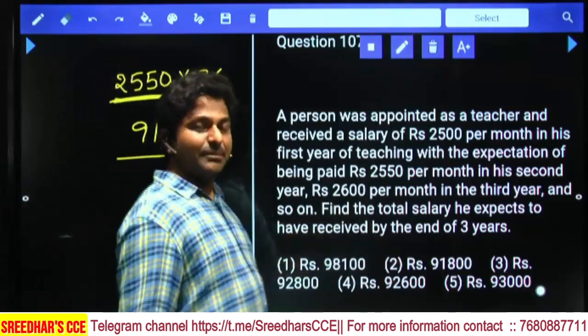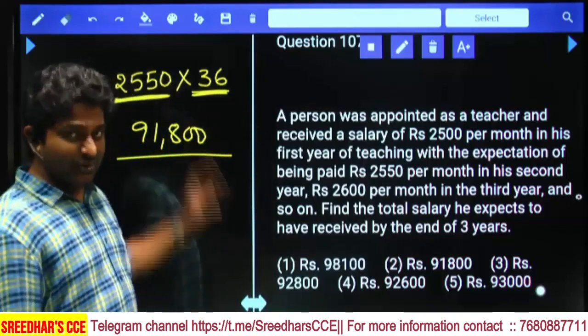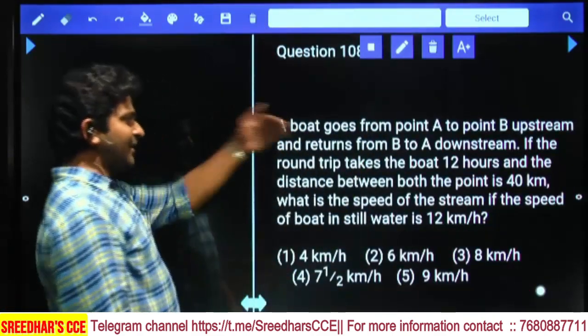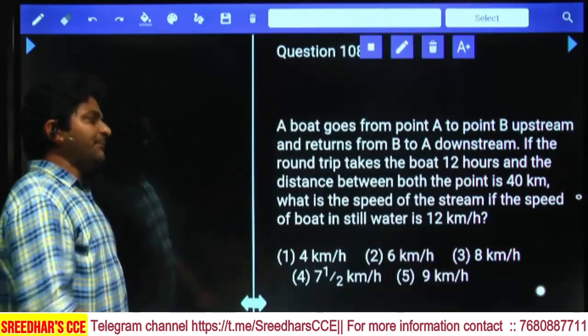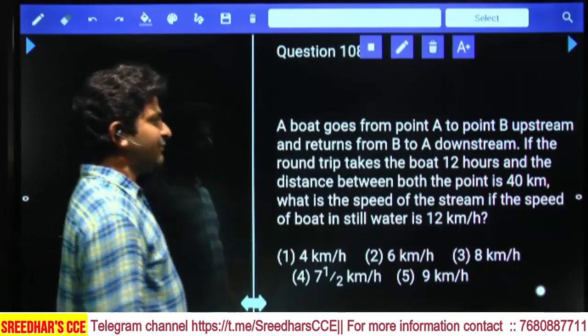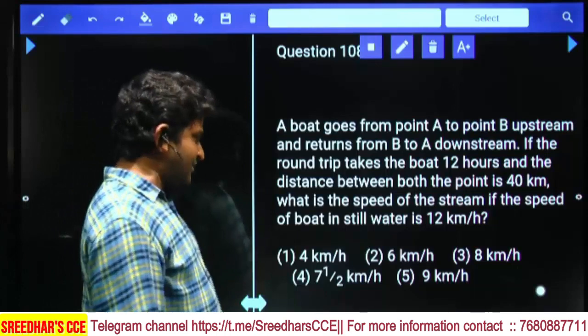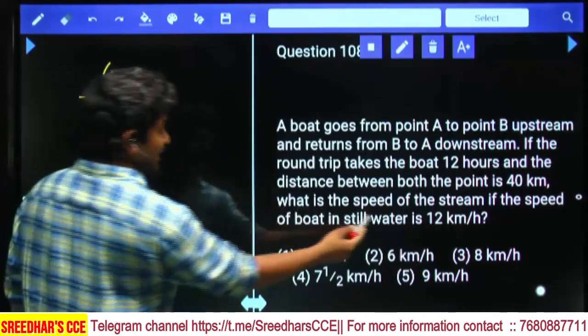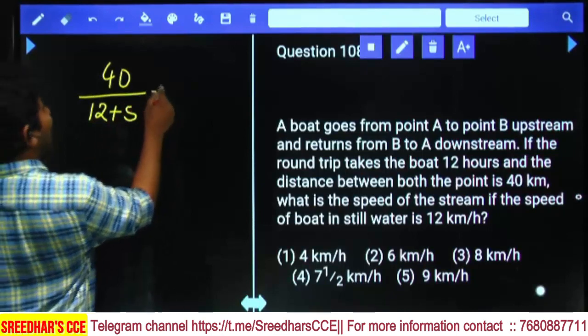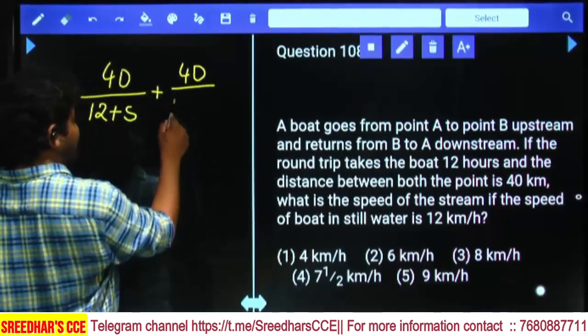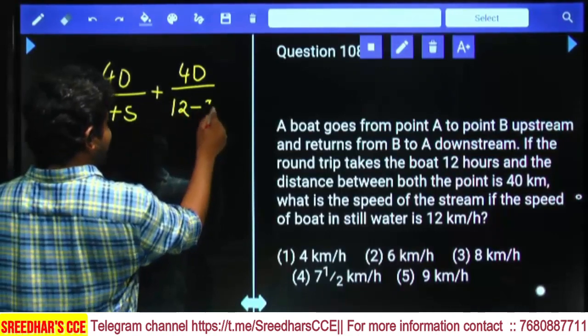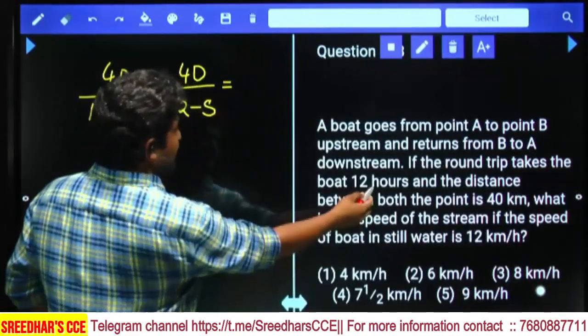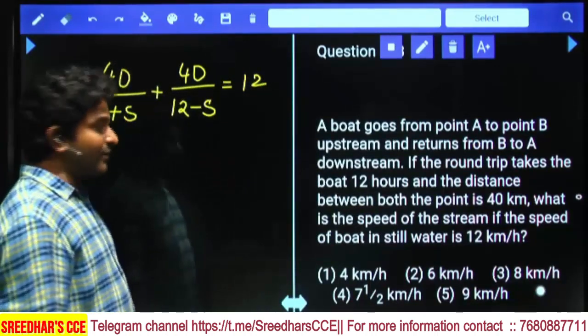A boat goes from point A to point B upstream and returns from B to A downstream. If the round trip takes 12 hours and the distance is 40 km, what is the speed of the stream if the speed of the boat in still water is 12 km/h? 40 km traveled downstream is 40/(12+s), upstream is 40/(12-s), and total time is 12 hours.